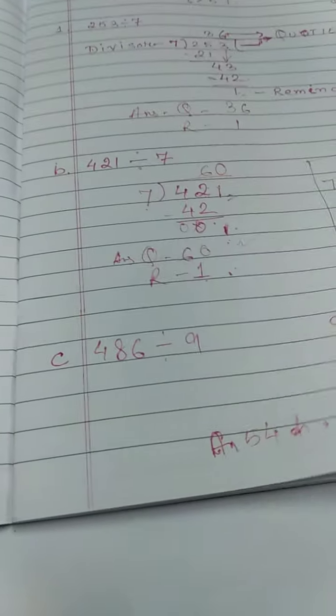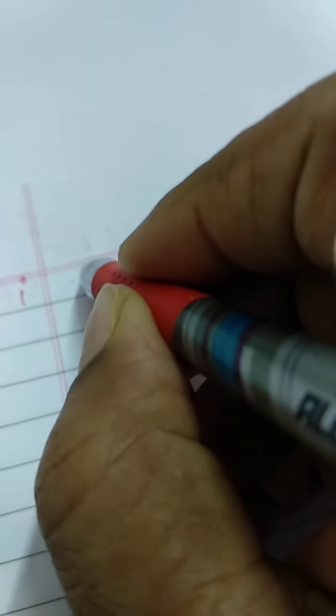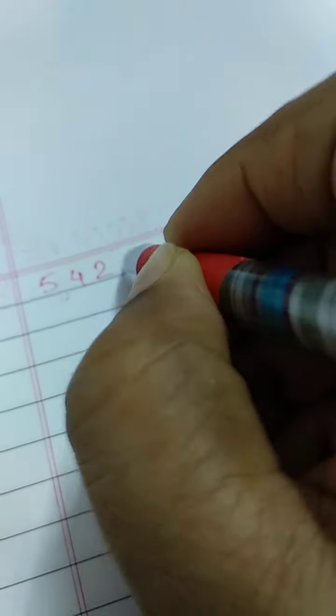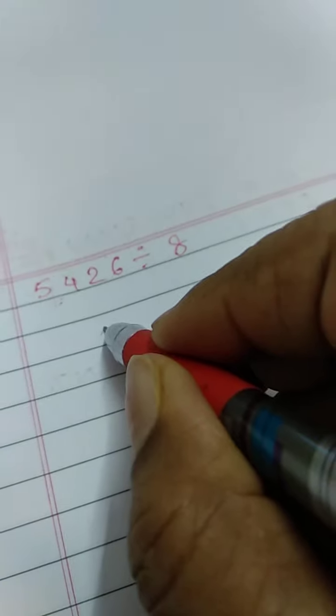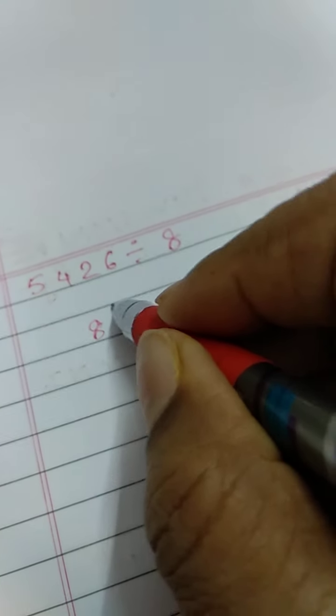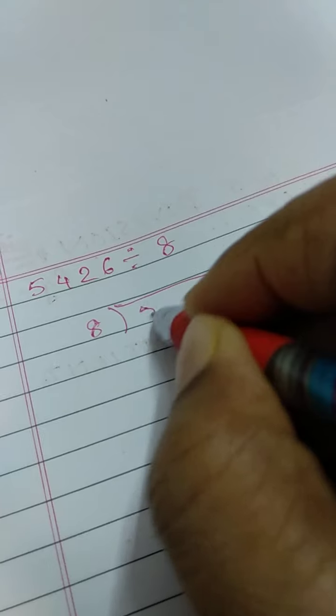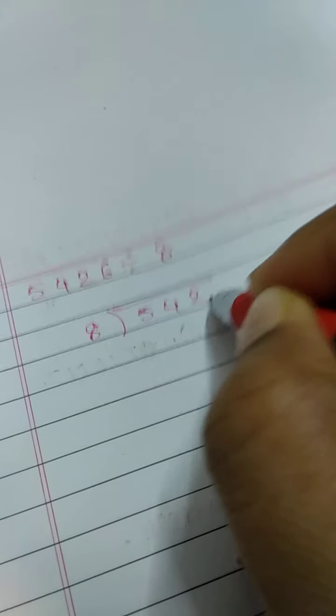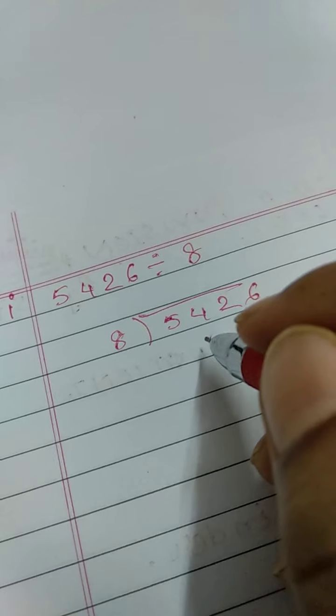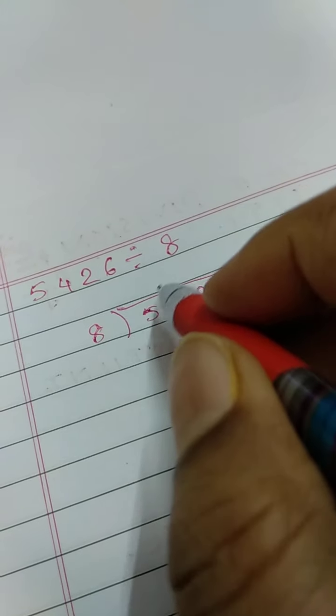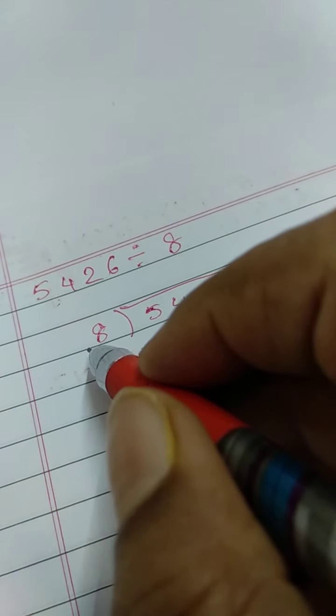One more sum I will do it for you. The number is 5426 divided by 8. Now again I am writing here 8, giving a bracket, 5426. Mind that you are copying the number properly, otherwise the sum will be wrong. So 8 times 5 is 40, 8 times 6 is 48, 8 times 7 is 56.